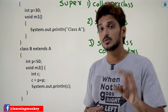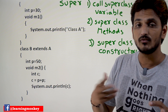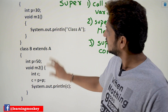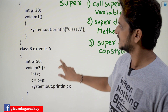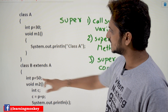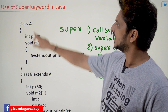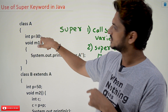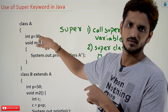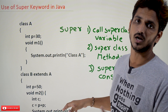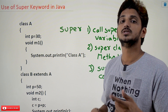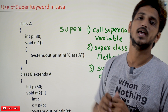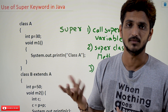Suppose the programmer wants to use the variables that are available in the super class. What is the super class for B? It is A. If you want to use the value p = 30, how are we going to do that? Using the super keyword, we are going to call the super class instance variables.